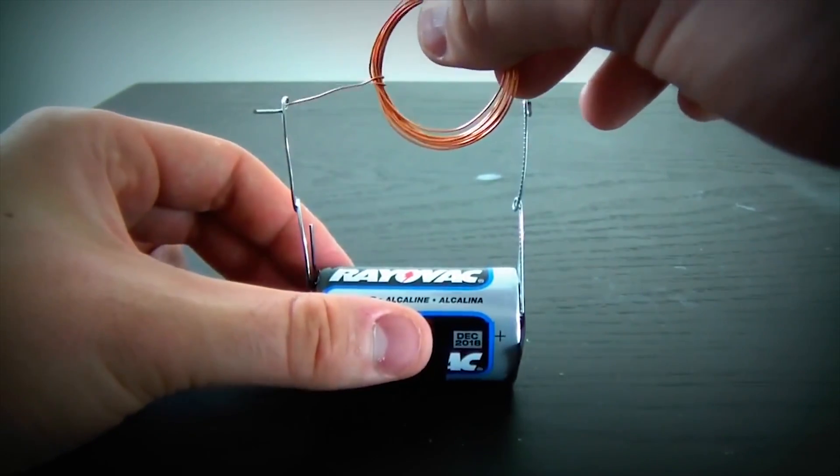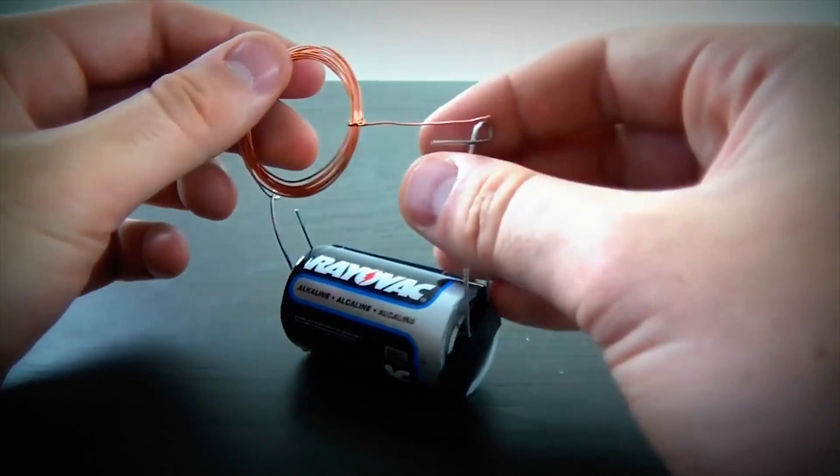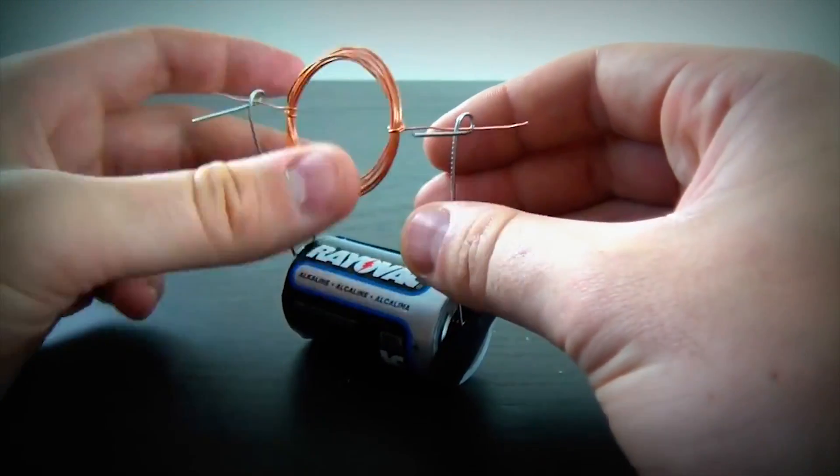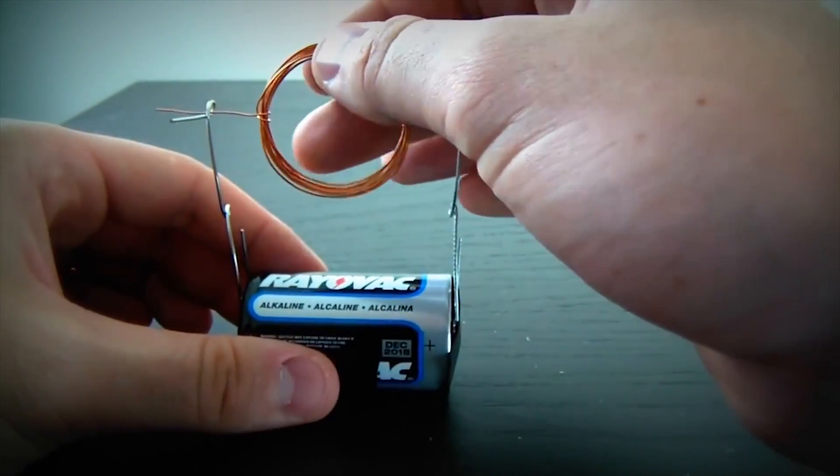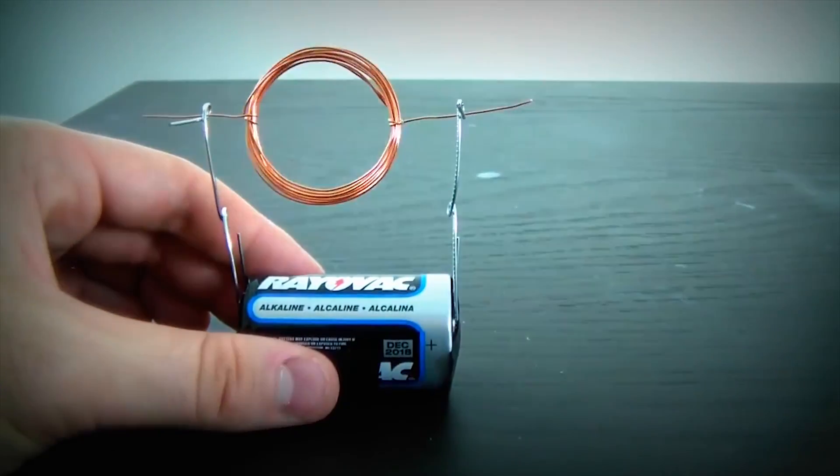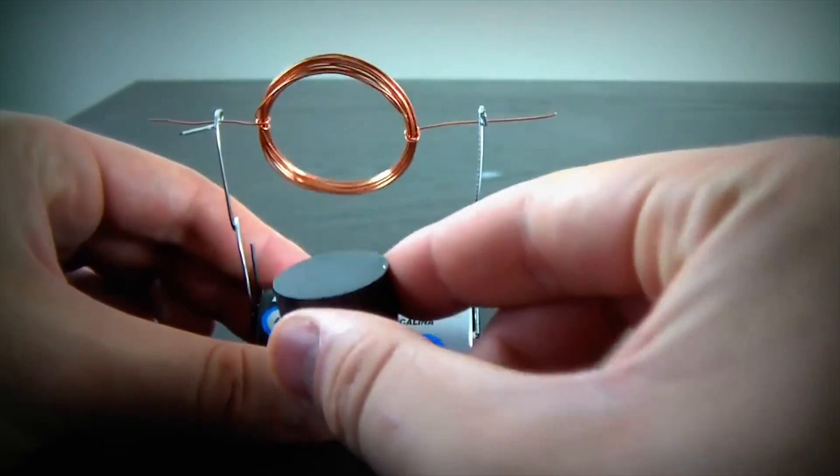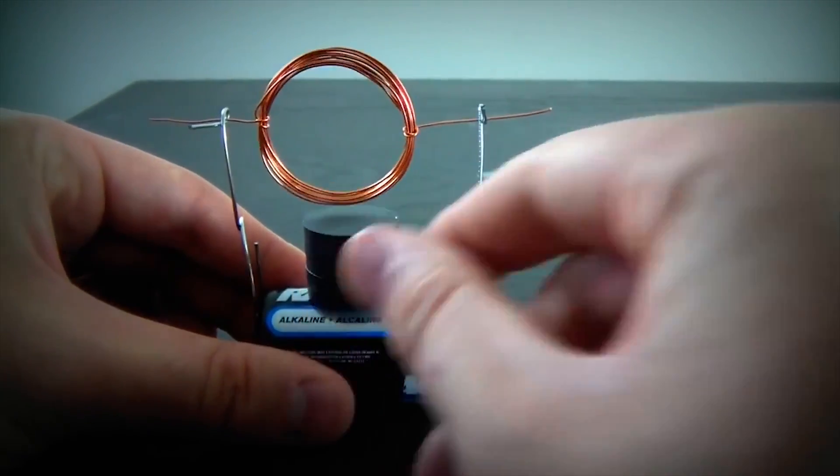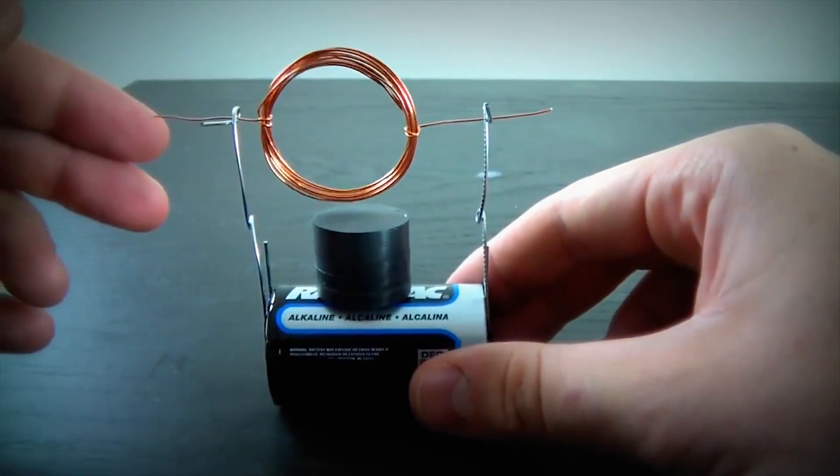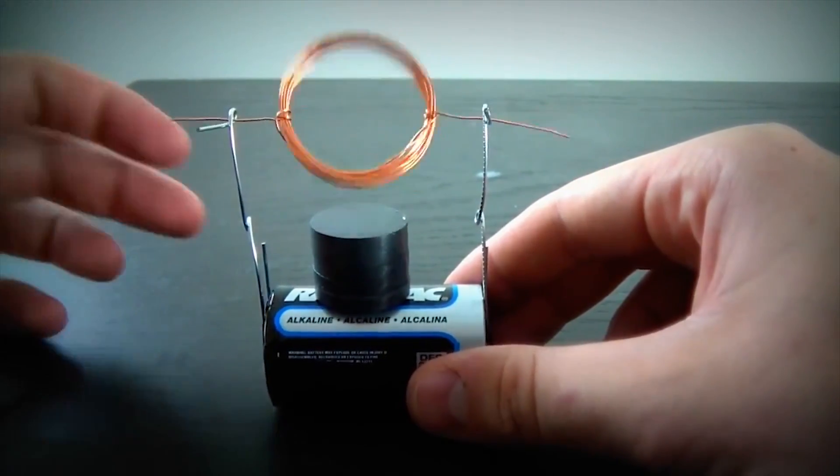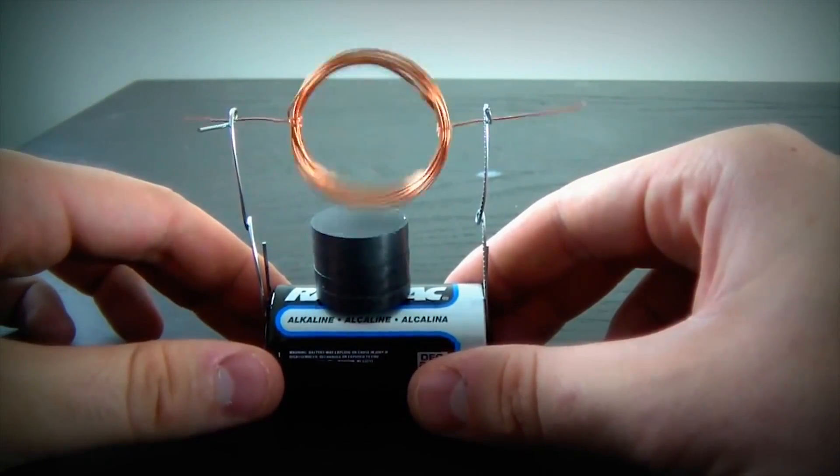And put it through the... this hole set here. You see how it is? Then we gonna get our magnet and put it under. Now find the center gravity and it's gonna start spinning real fast.